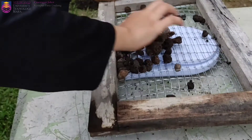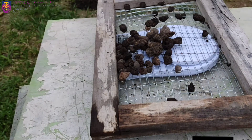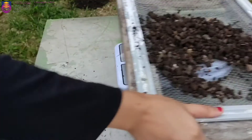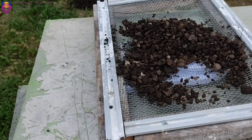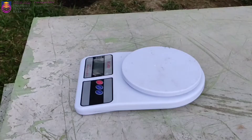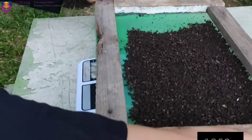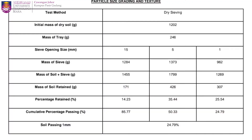The mass of soil retained in each sieve is recorded — for the 15mm sieve, 5mm sieve, and 1mm sieve. The table shows all the data collected from the testing session. Based on the data, we can obtain the value of percentage retained, cumulative percentage passing, and also the soil passing for the 1mm sieve.